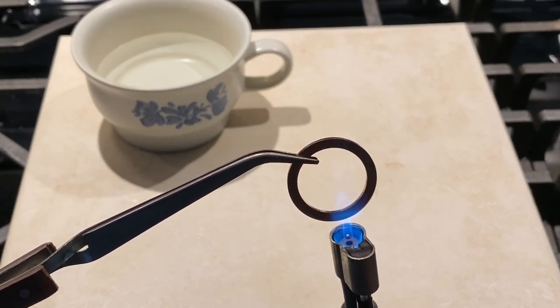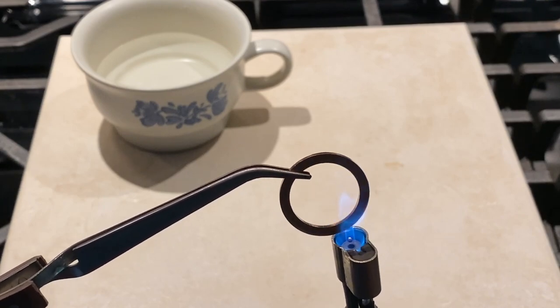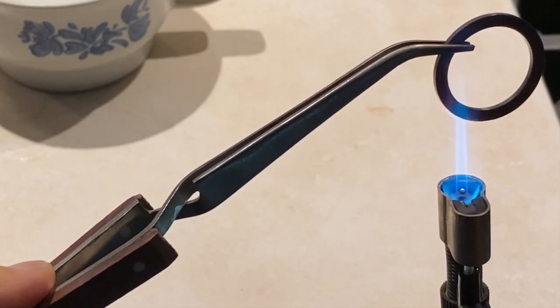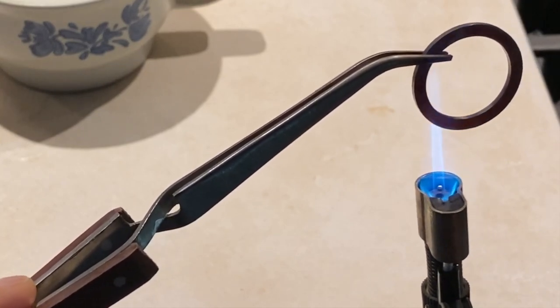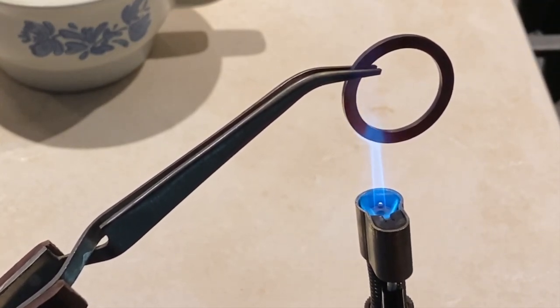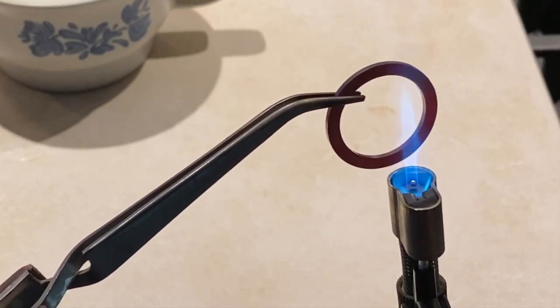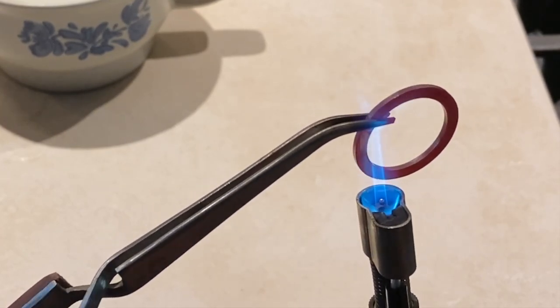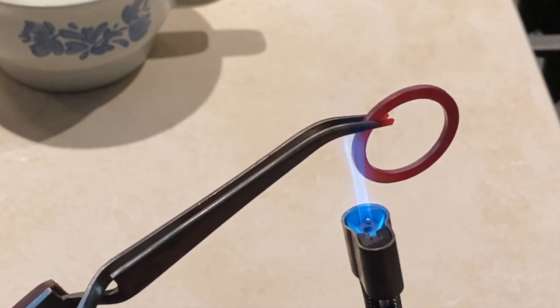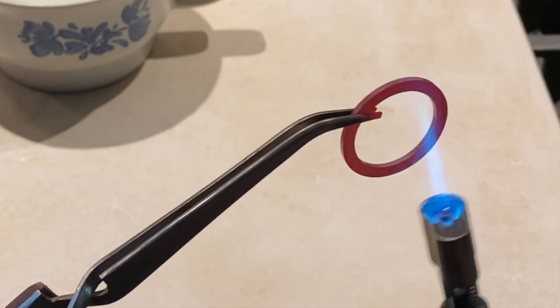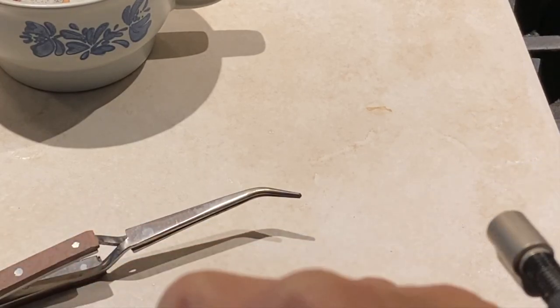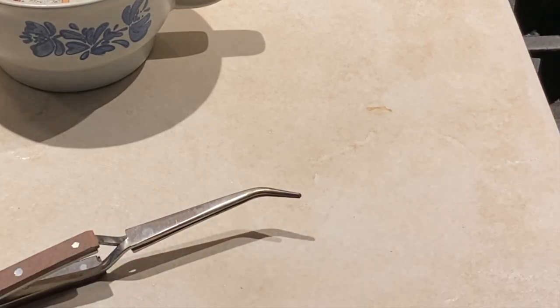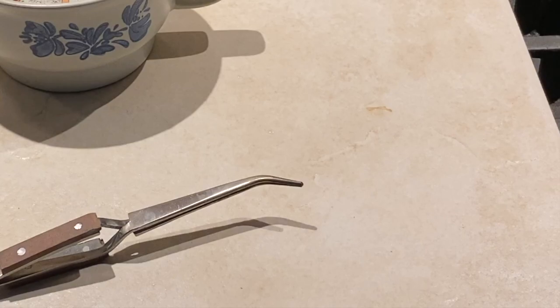I'm going to get it all glowing orange. Okay, so now that I have annealed this copper washer, let's go see if I can shape it into a little clasp.